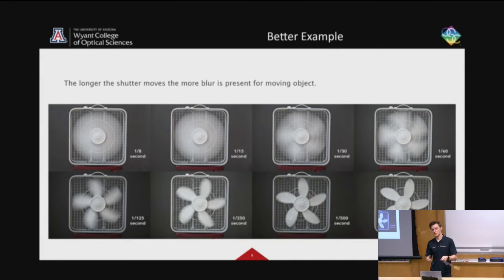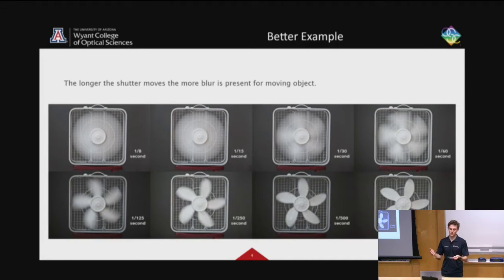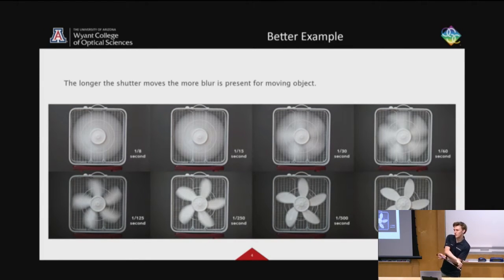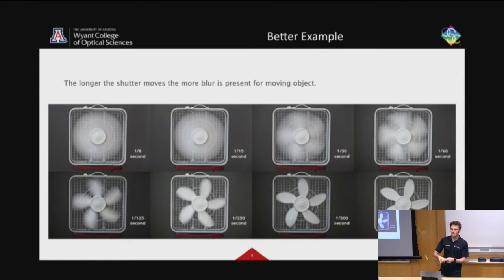At one eighth of a second, it just sees a blur. At one fifteenth, maybe it sees me spinning this a little slower. One twentieth, one twenty-fifth — maybe right where I'm holding it here is like one five-hundredths. You can see the fan, and then it gets sharper and sharper. In that case, you would need more and more light to represent your image.